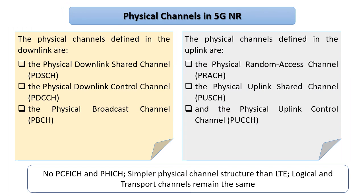Before moving to the next channel, I want to briefly differentiate between LTE and 5G NR with respect to physical channels. Many channels are the same, but what is absent in 5G NR are two channels: PCFICH and PHICH. PCFICH indicates how many symbols to look for PDCCH in a subframe, and PHICH is used for HARQ ACK/NAK.